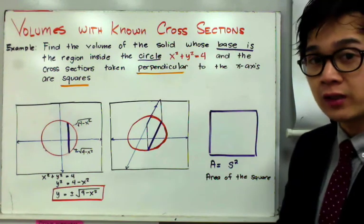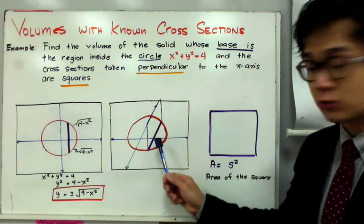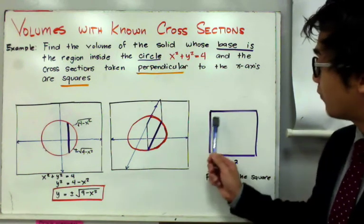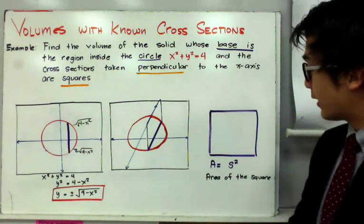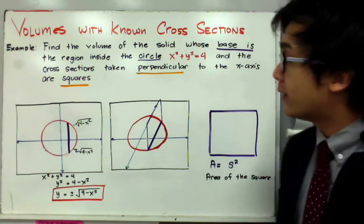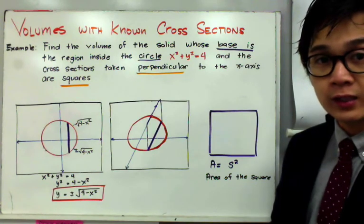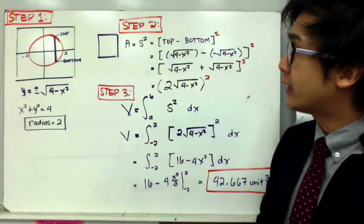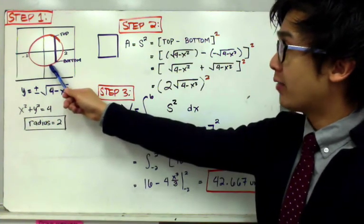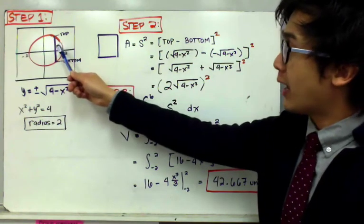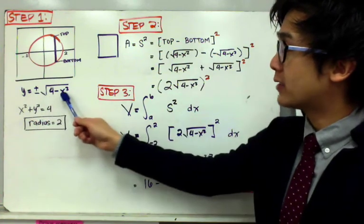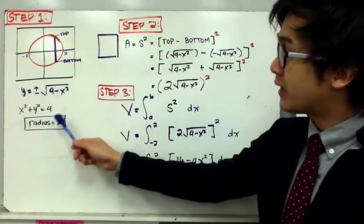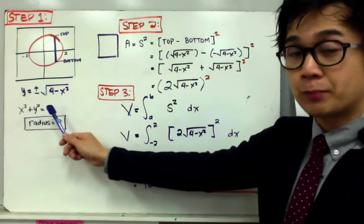Since we're finding the volume of a solid with a circular base and a square cross-section, we'll find the area of the square using the formula A = s². For step one, sketch your graph showing the circle, the square cross-section top view, and the function y = ±√(4 - x²), which gives a radius of 2. These are the key functions we'll use in computing the volume.